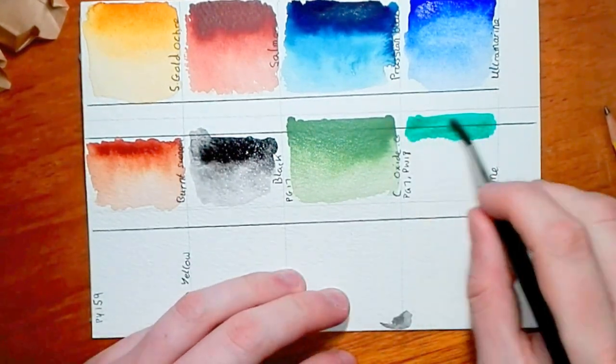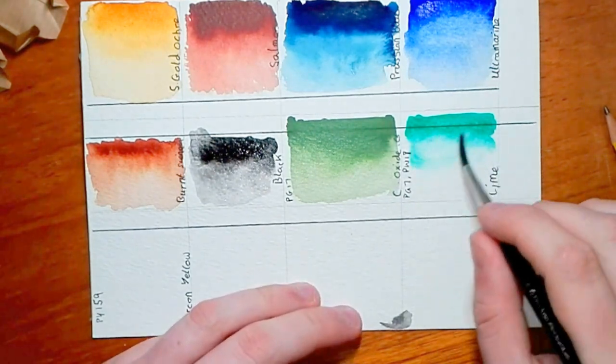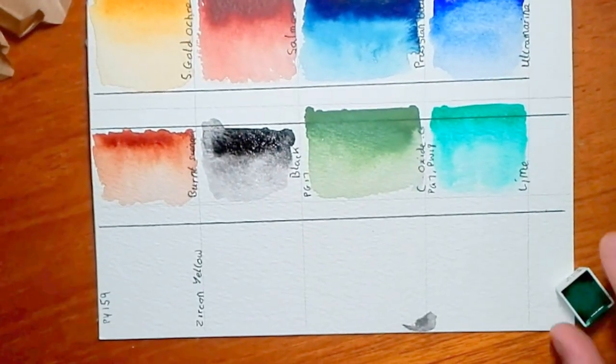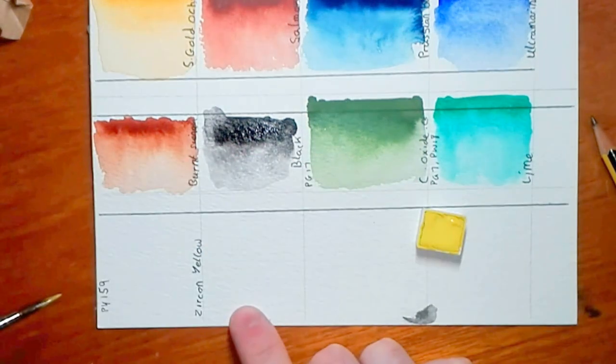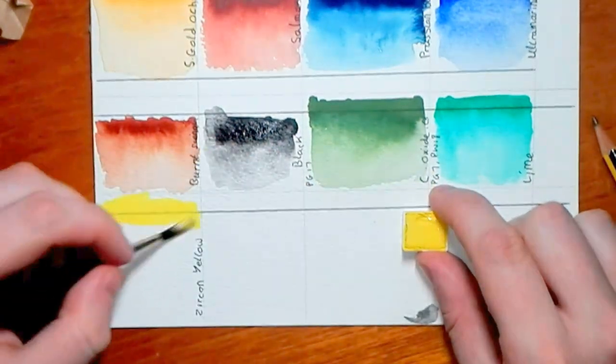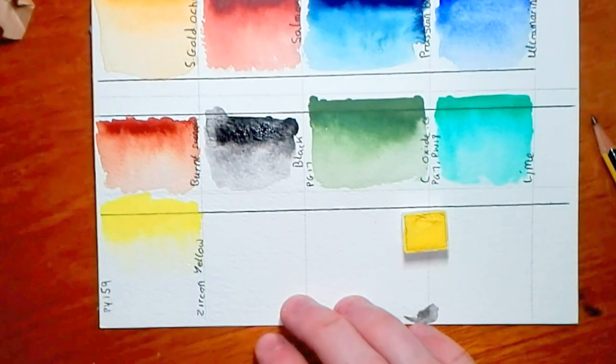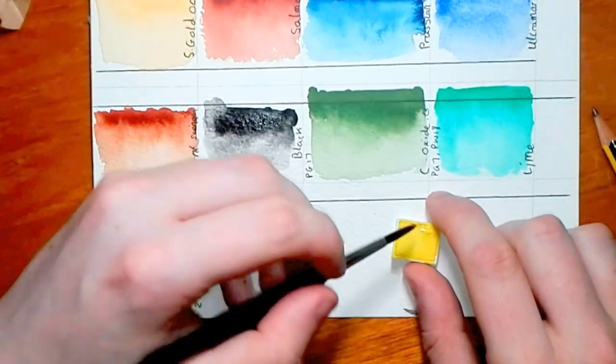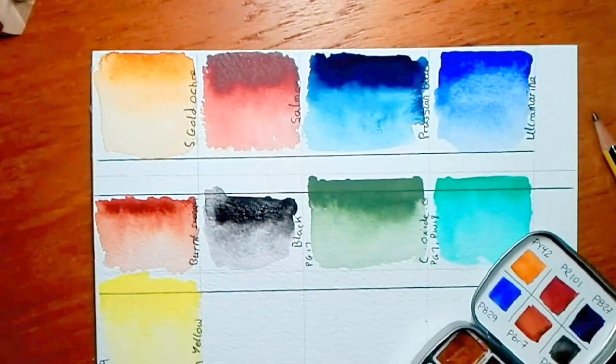This next color is Viridian which is lime green. It's a bluey sort of green. It's like a viridian or an emerald green other brands might call it. It's a very nice transparent color. The next one was zircon yellow which is a lemon yellow. It's a very nice yellow. Usually I'm not too keen on lemon yellows. It's a little bit sickly but this color was actually very nice and not sickly at all. It's a very nice bright color.